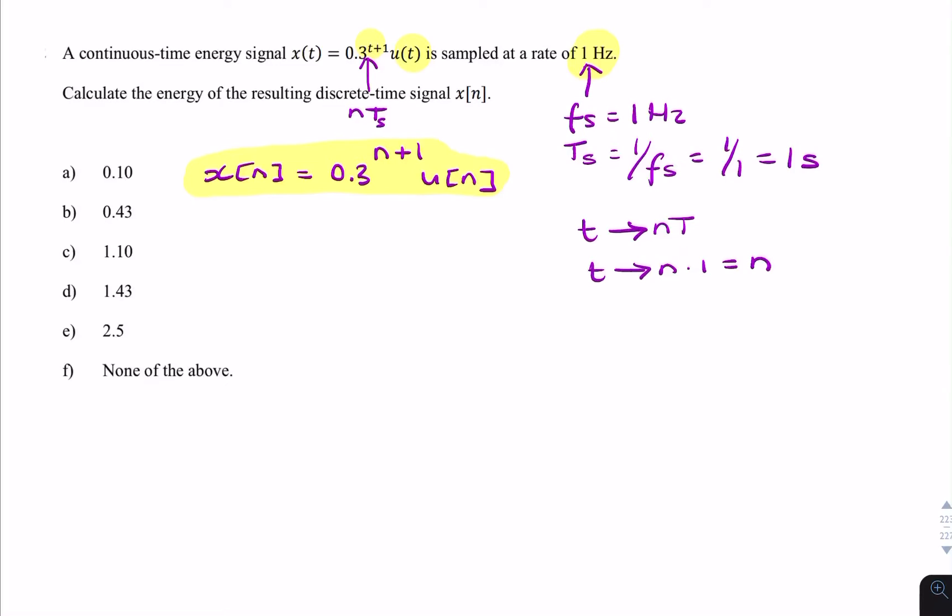The next stage is to find the energy. The energy of a discrete time signal is the summation from minus infinity to infinity of x squared. So that's simply the summation from n equals 0 to infinity. Why 0? Because we have a unit step. The unit step is 0 for negative values of n.